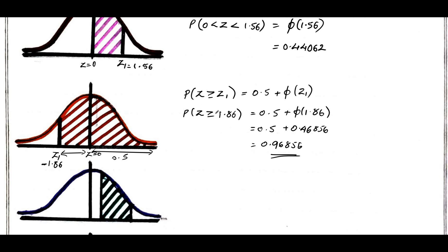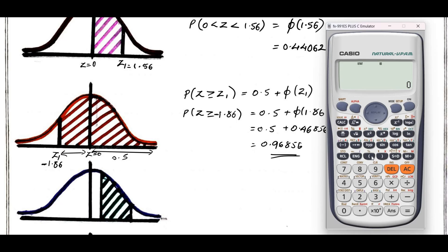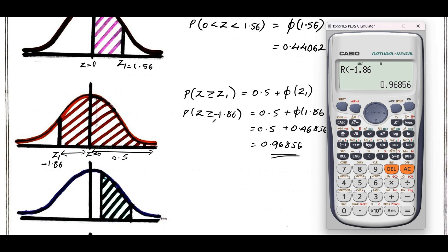I need to find z greater than or equal to minus 1.86. To find this using a calculator, go with shift 1, then distribution 5, and consider R. When you get the probability of z greater than or equal to z1, use R — press 3. The value z1 here is minus 1.86; type minus 1.86, press equal, and you get the direct answer.